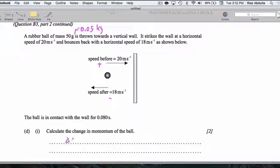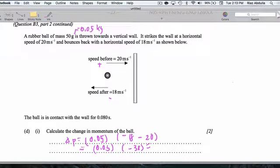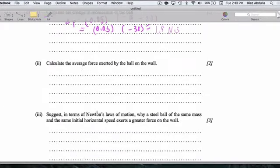So the change in momentum is going to be 0.05 times negative 18 minus 20. So this is 0.05 times minus 38. And that's going to give us a change in momentum of 1.9 newton seconds.